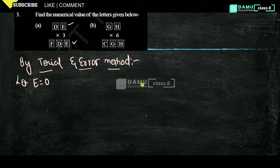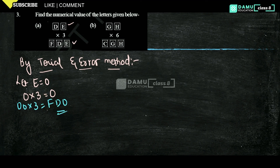Then 0 into 3 gives 0 only — condition satisfied. So D0 into 3 gives FD0 — yes, satisfied. Then we need a 3-digit number. So for D, these are all 3-digit numbers.